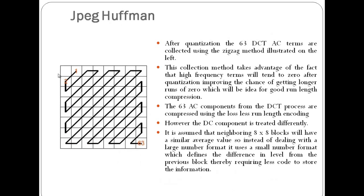After doing this, we take the DC component and then the 63 DCT AC terms are collected using the zigzag method. We first start with this, then take this, then this value, and so on. This is the way we collect the data.